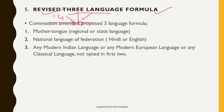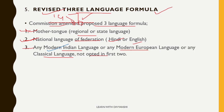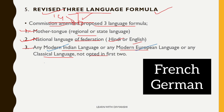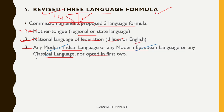Kothari Commission amended the proposed Three Language Formula — known in Hindi as 'Teen Bhasha Sutra.' The formula includes: first, mother tongue or the regional/state language; second, the national language of the federation — Hindi or English; and third, any modern Indian language, any modern European language, or any classical language not already opted in the first two. Modern Indian languages include Bengali, Punjabi, Urdu, Telugu, Kashmiri, Sanskrit — a total of 21 languages. Modern European languages include French and German. Classical languages include Malayalam, Tamil, Telugu, Sanskrit, and Odia.